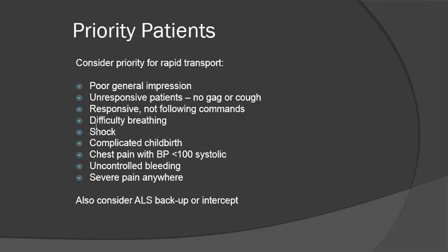What are priority patients? Priority patients are considered a priority for rapid transportation. They have a poor general impression — you walk up on them and see that there are loads of issues, and usually after time in the field you'll be able to recognize this the moment you walk in the door. For unresponsive patients that have no gag or cough, this can be an issue. If they're responsive but not following commands — remember we talked about competency — those are things you're going to want to take into consideration as well.